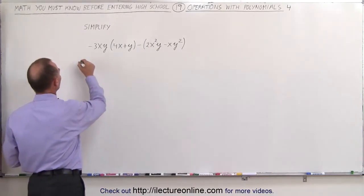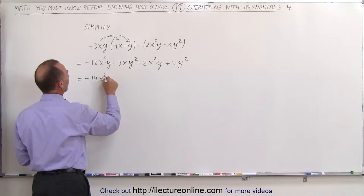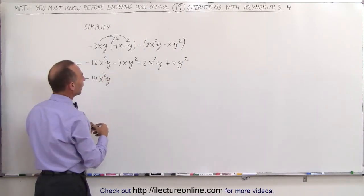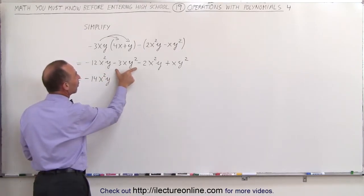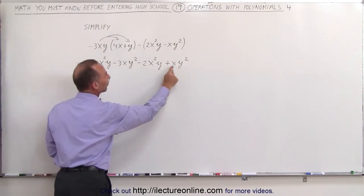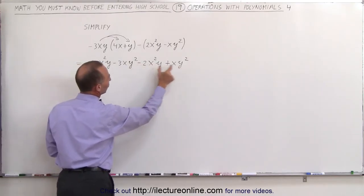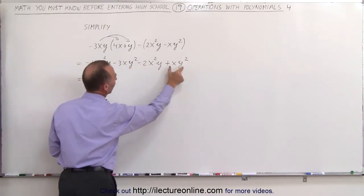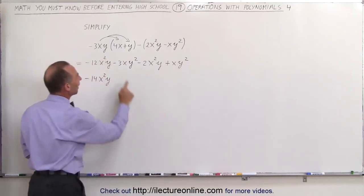The way that's done is as follows. We multiply the minus 3xy, which is a single term, first times the 4x and then times the plus y. And then we apply the negative sign here, changing the sign of everything inside of parentheses. And then we'll add like terms together.